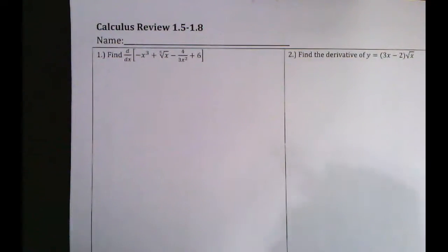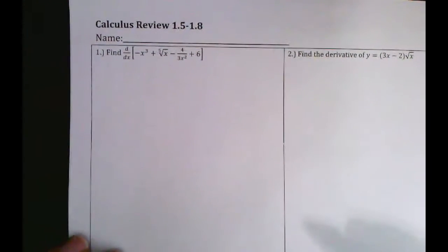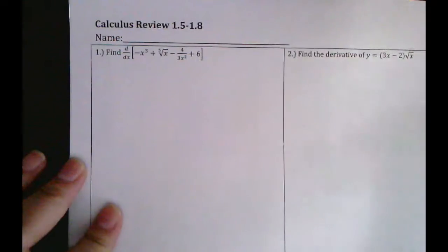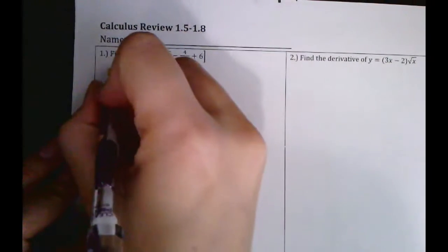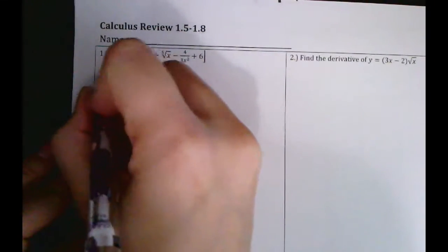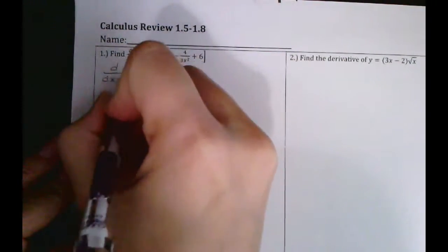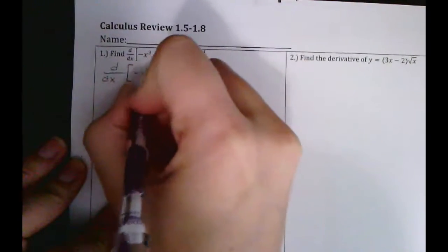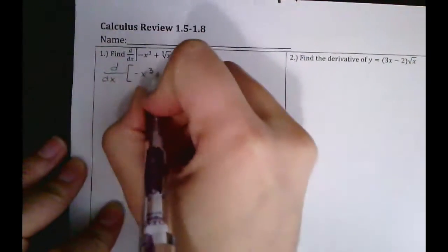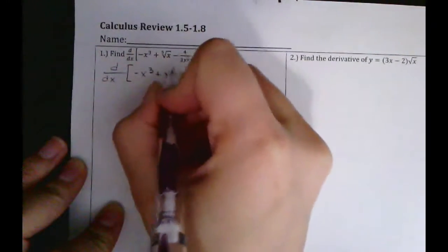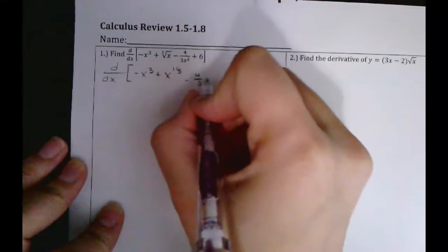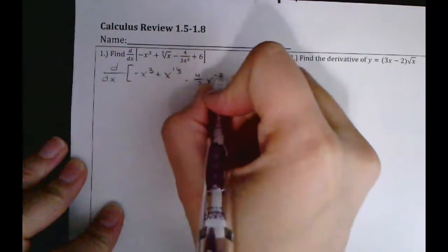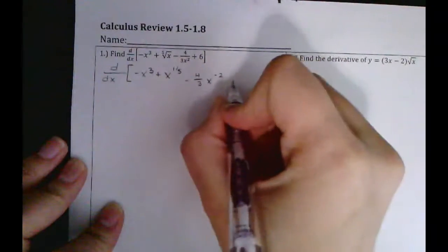Let's go over the review sheet. For this first one, I'm going to rewrite it before we differentiate it because there are a lot of things that don't have exponents. So we write this one — this is going to be four thirds x to the negative two power.